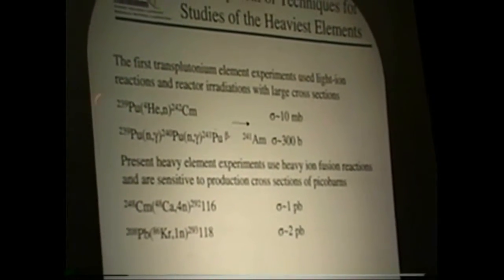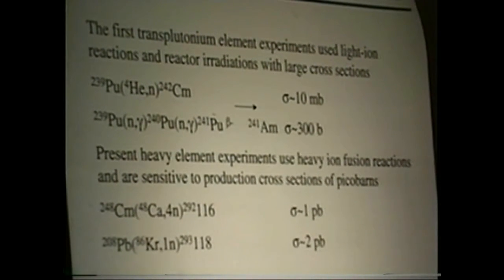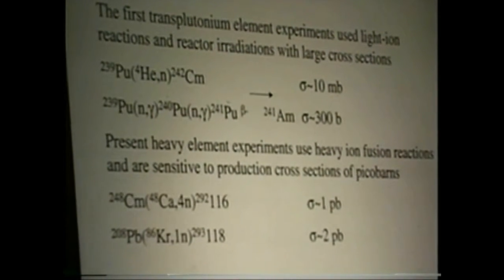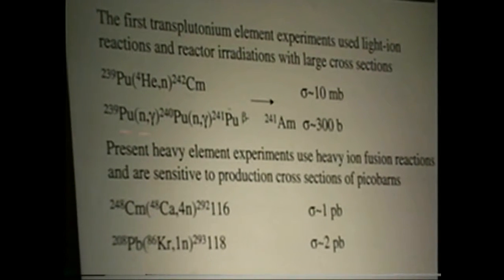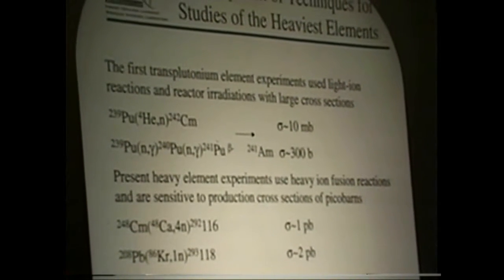This is the reaction used for the discovery of curium. It had a cross section of about 10 millibarns. The half-life for curium 242 is 162 days. 244 is 18 years. And also a neutron capture to make americium 241 here.